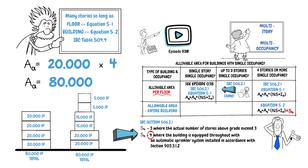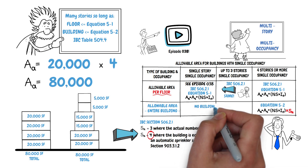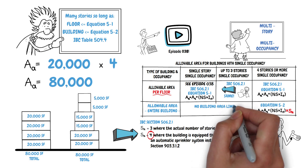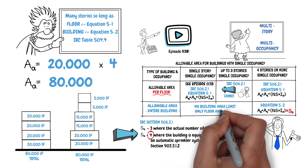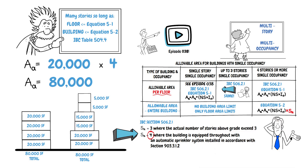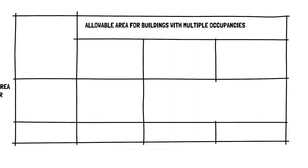Now that we're talking about building limits, we can note that the first two examples do not have building size limits, only floor area limits. That covers multi-story buildings with a single occupancy. Now let's move on to buildings with mixed occupancies.